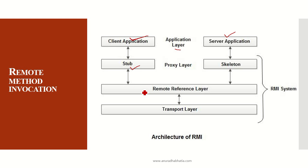The stub sends the message to the remote reference layer, which is a stream-oriented layer. Then comes the transport layer, which is a connection layer. Data is transferred from the stub to the remote reference layer, then the transport layer, and then the skeleton on the server side. The skeleton interacts with and handles the various methods, classes, and data, interacting with the actual objects on the server side.